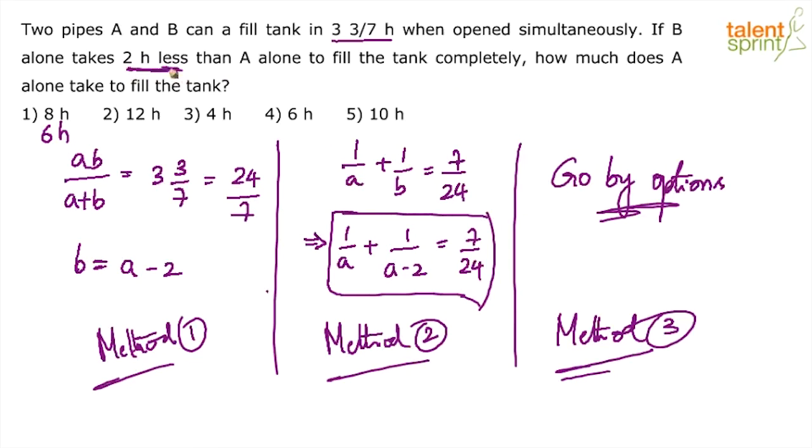How do we know this? From the second statement. The second statement clearly tells us that B takes 2 hours less. So if A takes 8 hours, B would take 6 hours. Similarly, if A takes 12 hours, B will take 10 hours, and so on. In each of the options, the time taken by A alone is given to us, from which we can find out the time taken by B alone. Just subtract 2.